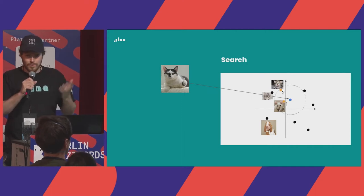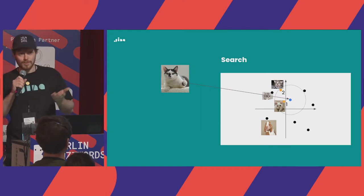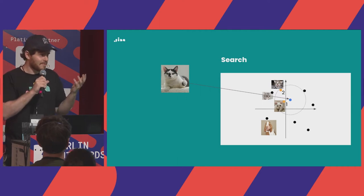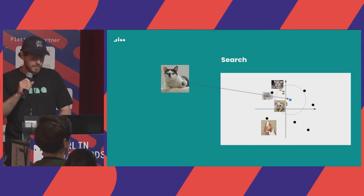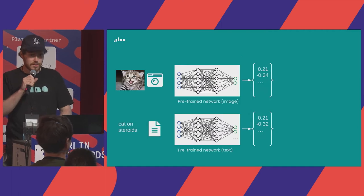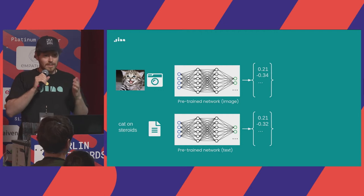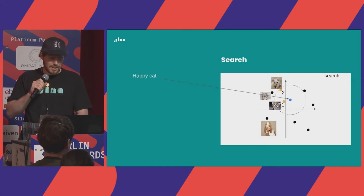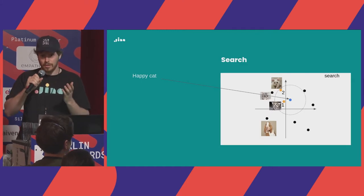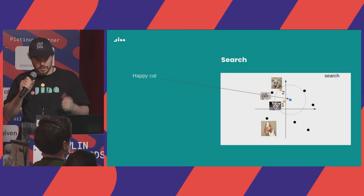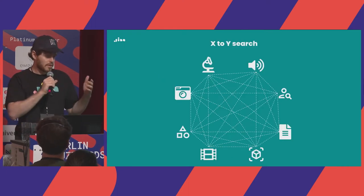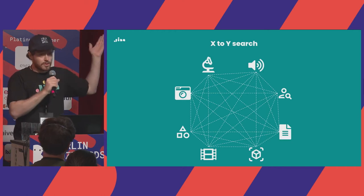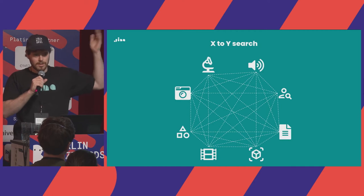We retrieve the nearest neighbor in that latent space, which is nice because we don't have to deal with all the complexity of the original data — we just work with vectors. This can also be done cross-modality: two networks map to the same latent space, so we can run a text query and search in the image space. All kinds of searches from modality A to modality B are possible.